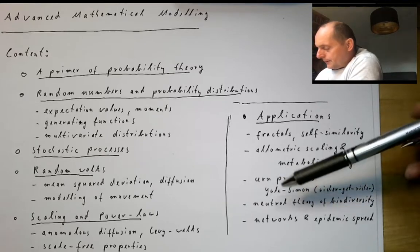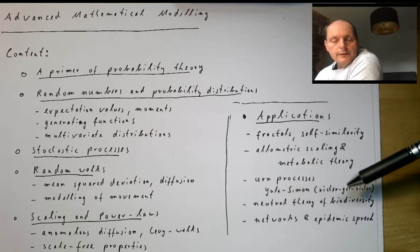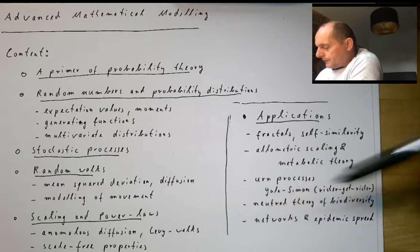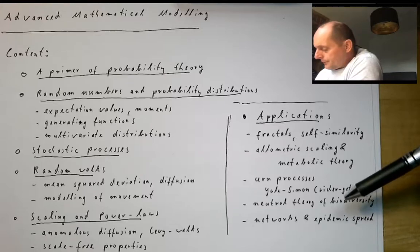We will look at some urn processes, which will allow us to look at something like the Yule-Simon process, the rich-get-richer phenomena which lead to power law distributions. We will see how this works out in the neutral theory of biodiversity and how we can use this to describe rank abundance distributions in ecology.